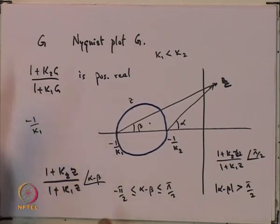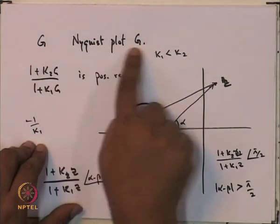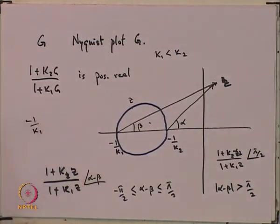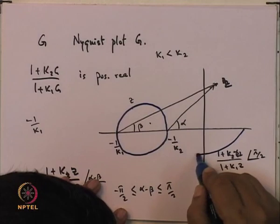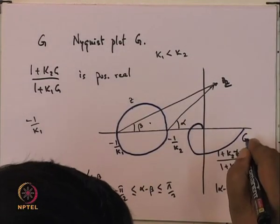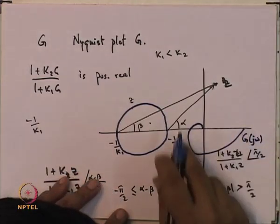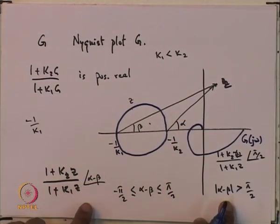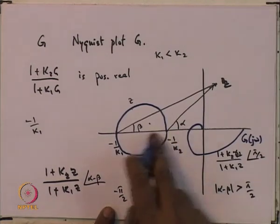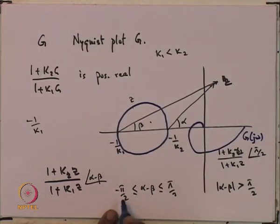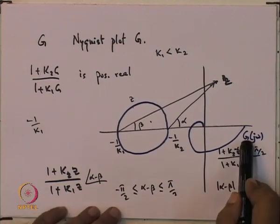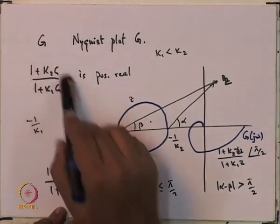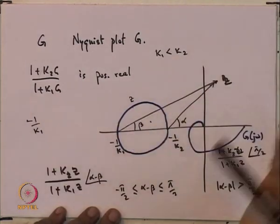The circle criterion states: along the boundary of the circle with diameter from −1/k2 to −1/k1, any point z gives (1 + k2·z)/(1 + k1·z) with angle exactly π/2 (upper semicircle) or −π/2 (lower semicircle). If the point z is outside the circle, then alpha minus beta satisfies the condition |alpha − beta| < π/2. If z is inside the circle, |alpha − beta| > π/2. So if the Nyquist plot of G lies completely outside this circle, the transformed Nyquist plot of (1 + k2·G)/(1 + k1·G) lies completely in the right half plane.